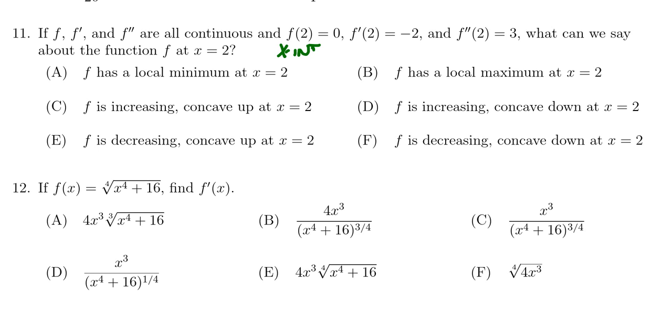If we look at f prime at 2, since it's negative 2, the derivative tells you the monotonicity of the function. So when the derivative is positive, the function's increasing. When the derivative is negative, that means the function's decreasing. And so we can tell that the function is decreasing at x equals 2.